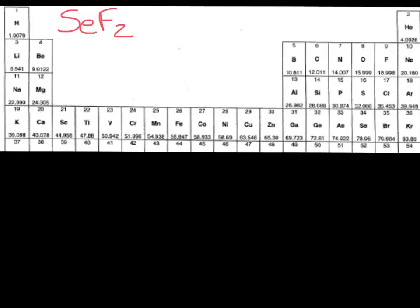Because once we draw the Lewis structure, we can then figure out the steric number for the molecule, and from the steric number we're going to be able to determine which basic geometry we're working from. After that, we'll be able to name the structure and also determine the bond angles.